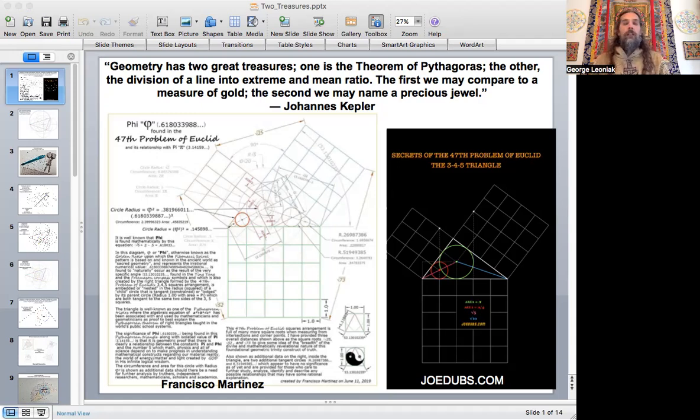And as I was saying, the inspiration for looking at this relationship more closely came from Joe, Joe Dubbs down here. And he showed me this diagram and the inspiration he had for the diagram came from Francesco Martinez. And this is from 2019, a diagram showing where the golden ratio shows up.